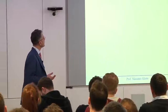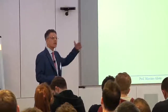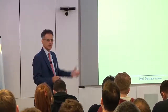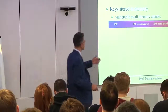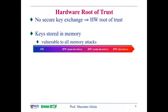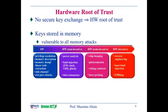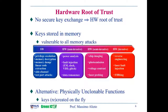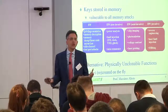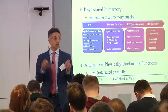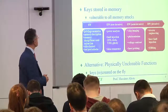We can use a hardware approach — we can store keys in memory. But it's well known that this is prone to a wide range of attacks, from software to hardware non-invasive, semi-invasive, and invasive. That's why people came up with the idea of physical unclonable functions, because those don't store keys. They create them on the spot.